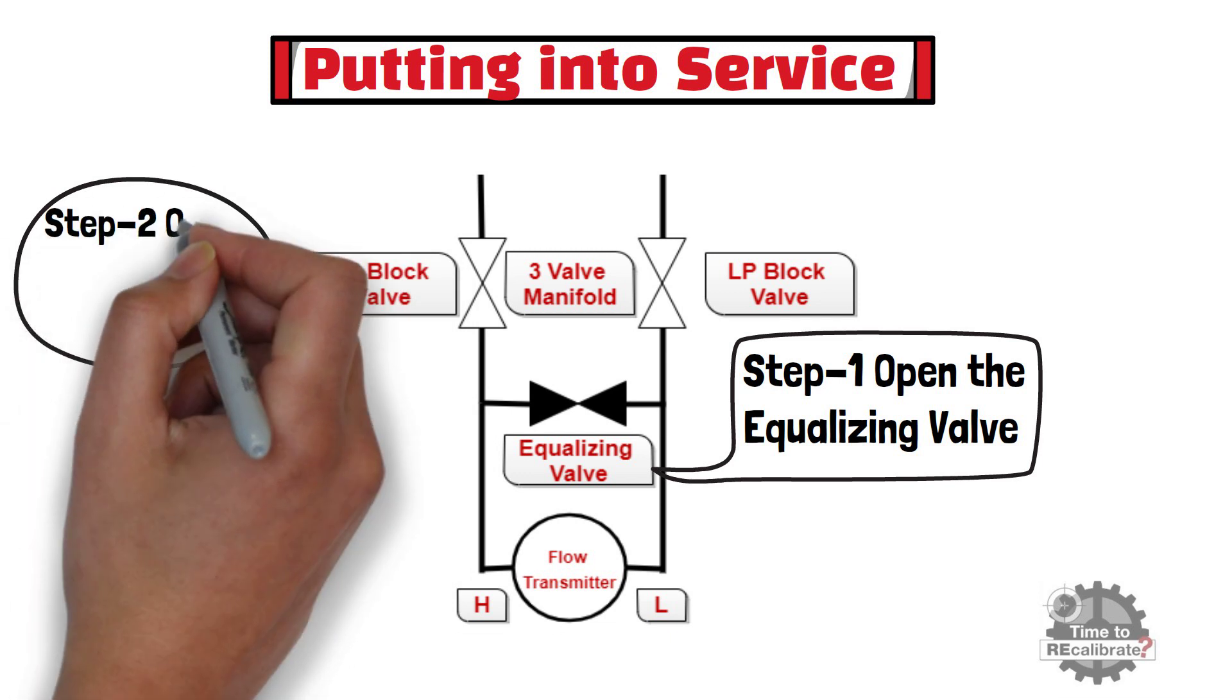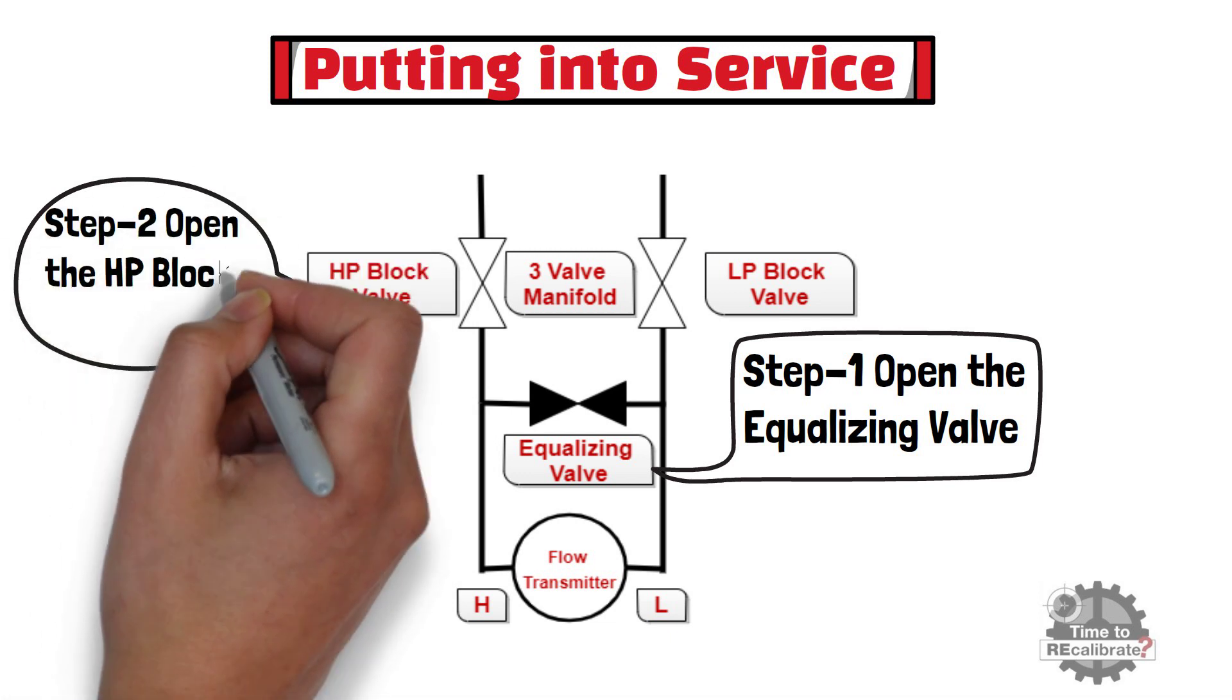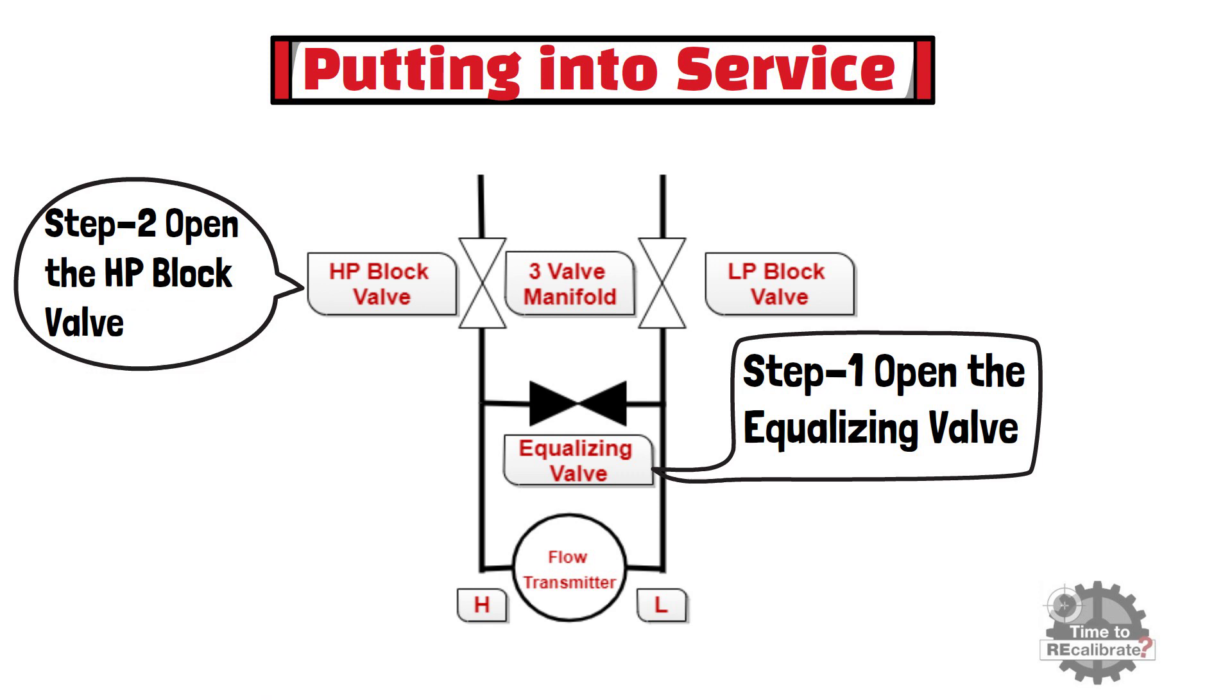In step 2, open the HP block valve by rotating valve in counterclockwise direction. Once we open HP block valve, both sides of the transmitter will be at the same pressure, which is equal to the HP side of the process pressure.